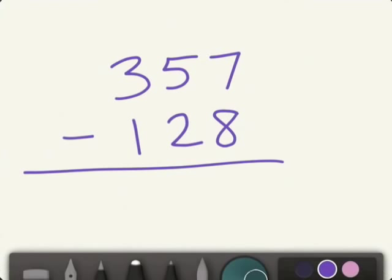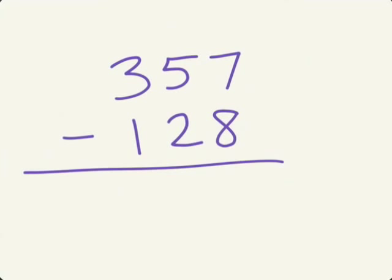So the key question here for each column of digits is, is the bottom digit bigger? And in the first case, yes, 8 is bigger than 7. So we need to borrow.